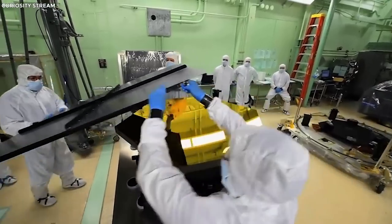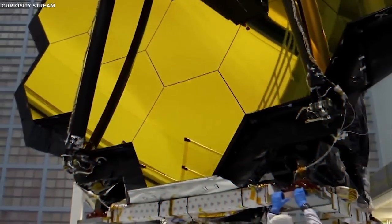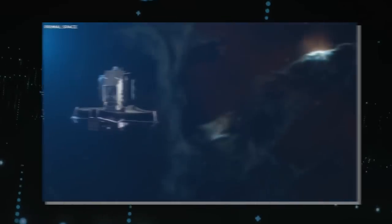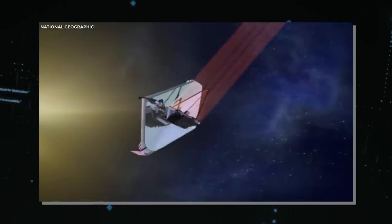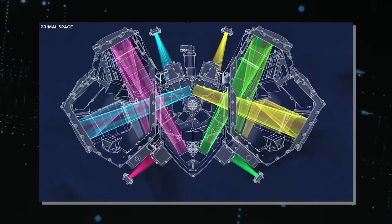The mirror's precision, finer than a human hair's width, is adjusted by shifting segments. Collected light reaches the secondary mirror, bounces to scientific tools, gets filtered, and lands on hypersensitive infrared detectors.